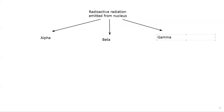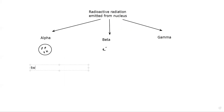An alpha particle is also known as a helium nuclei, because it is a combination of two protons and two neutrons. Beta is an electron. The alpha particle is a sum of two protons and two neutrons.